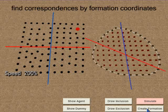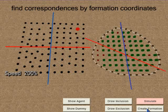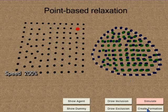Then, we use a novel formation coordinate concept to find the corresponding position of each agent in the template. Once the candidate positions are selected, a point-based relaxation is applied to make the agent more naturally distributed.